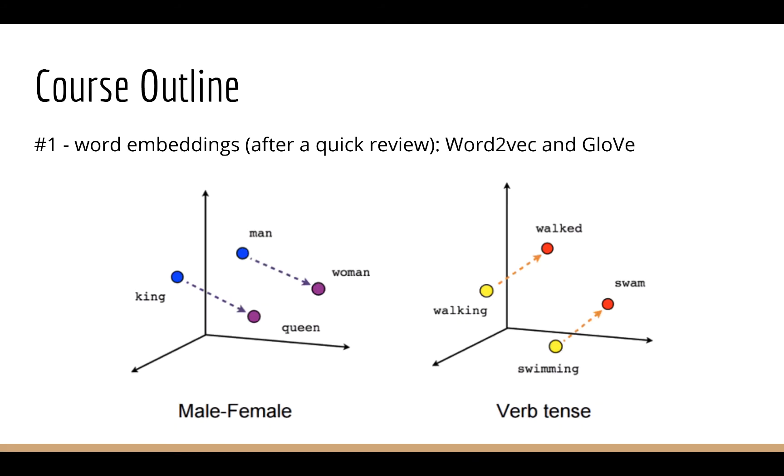This course starts out with one of the most important advances in deep NLP research, which is word embeddings. Of course, before doing this, we'll do a quick review to get you up to speed on all the knowledge you'll need to make it through the rest of the course. Word embeddings allow you to map words into a vector space. Once you can represent something as a vector, you can perform arithmetic on it. So this is where the famous king minus man equals queen minus woman comes from. We'll be looking at two of the most popular algorithms for finding word embeddings, which are Word2Vec and GloVe.